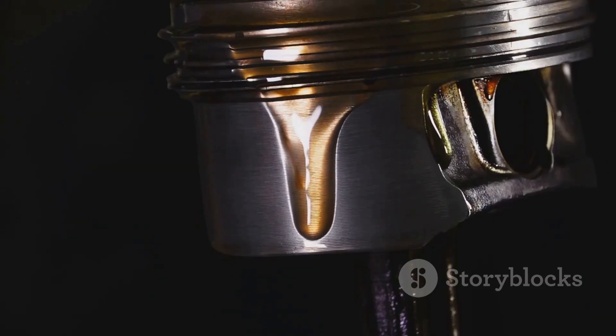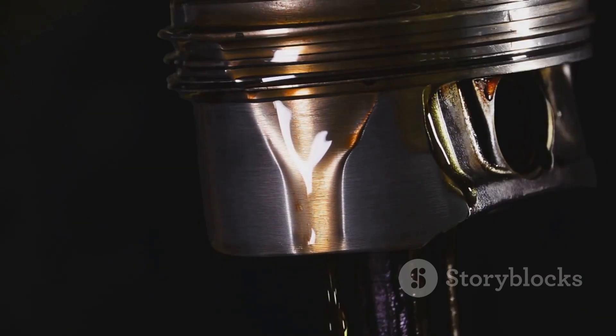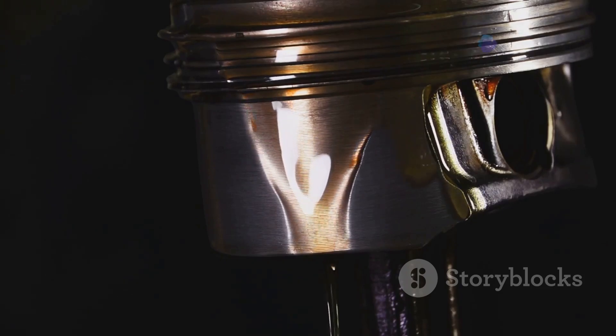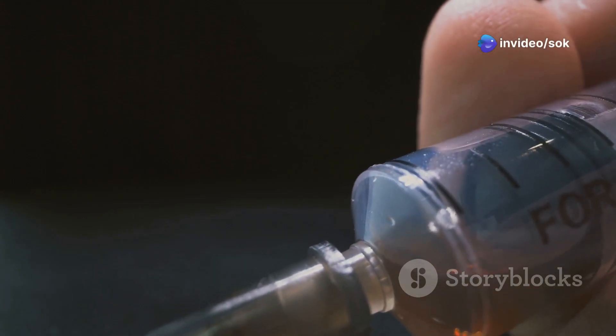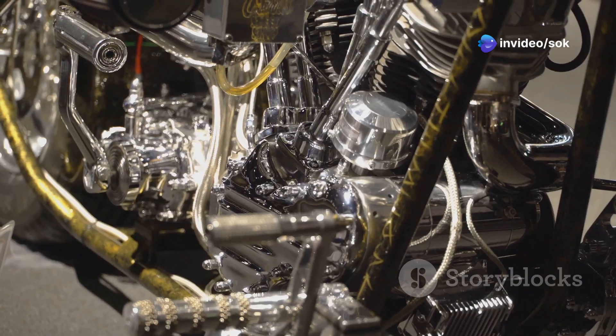Step one: the piston starts at the bottom of the cylinder, also known as the bottom dead center. At the start of the compression stroke, the piston sits at the bottom of the cylinder, ready to move upwards. Imagine a syringe with its plunger fully depressed, representing the piston at its lowest point. The air-fuel mixture drawn in during the previous intake stroke fills the space above the piston.